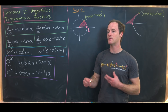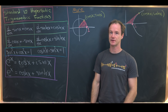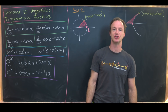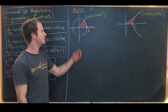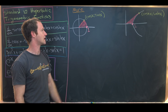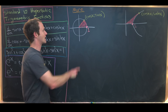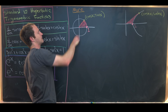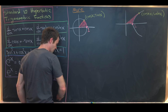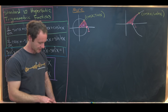Today I want to look at another relationship between the trigonometric functions and the hyperbolic trigonometric functions that's a little bit more geometric. So let's say we've got a unit circle. It's well known that that can be parametrized with cosine x, sine x, where x is the angle from the positive x-axis — that is, x is this angle right here.